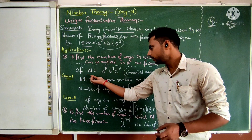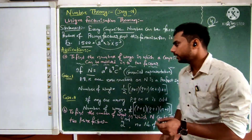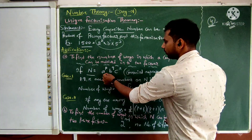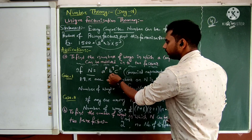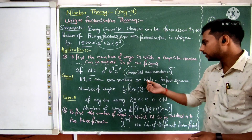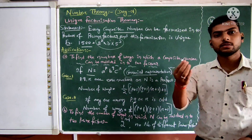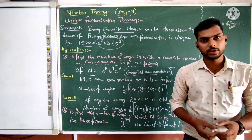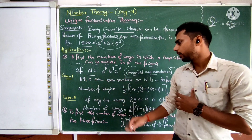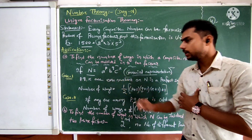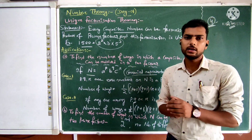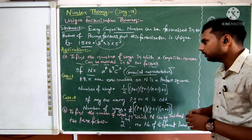If a number n can be factorized in the form a^p × b^q × c^r, this is known as the canonical representation, or standard form, of the number n, where a, b, c are prime numbers and p, q, r are whole numbers.